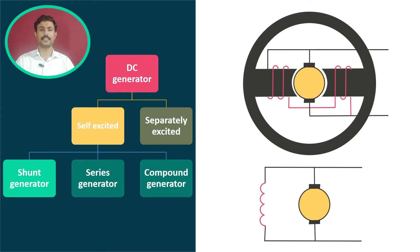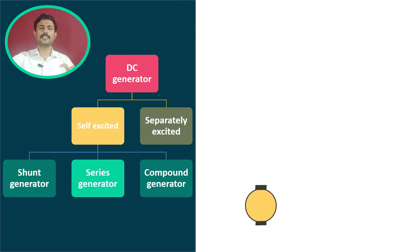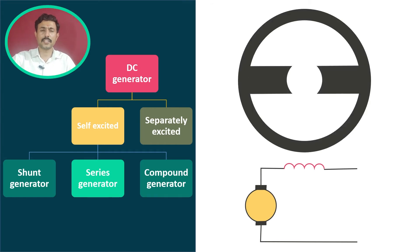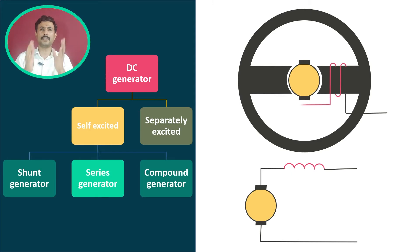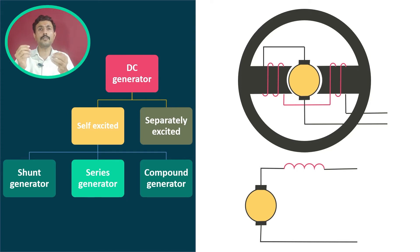Now let's check the series generator. In a series generator, the armature winding and field winding are both connected in series with each other. If we observe its cross-sectional view, you can observe that the armature winding and field winding are placed like this — you can observe how they are connected in series with each other. With this diagram it is easier for us to understand how this DC generator works.